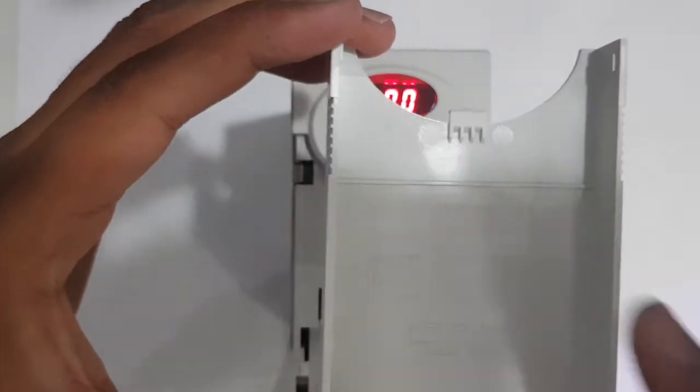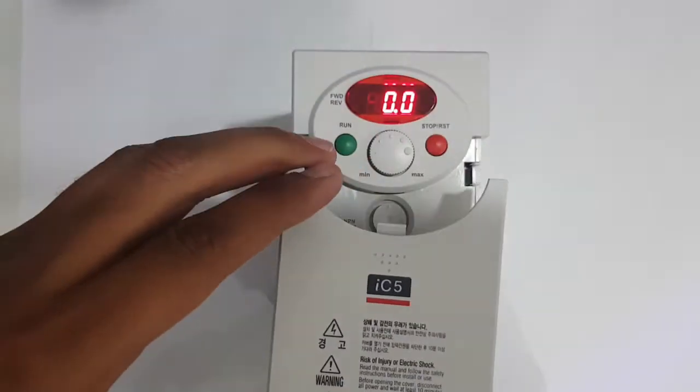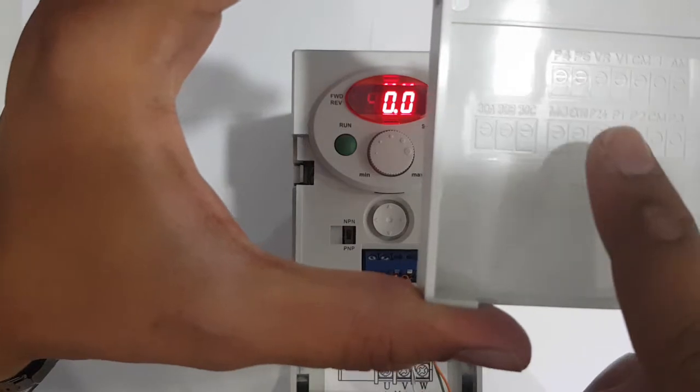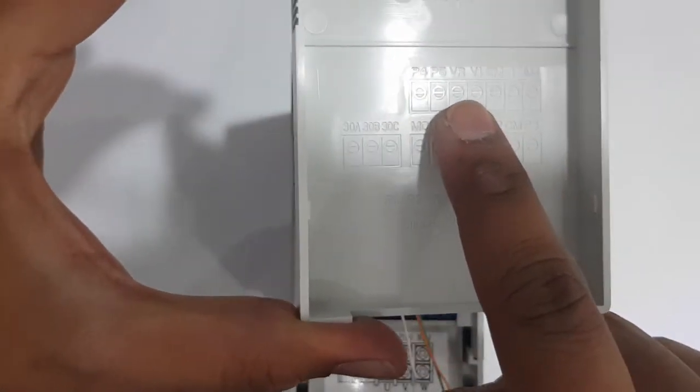This is the cover of this drive. Just remove it and here you will see VR, V1, and CM.